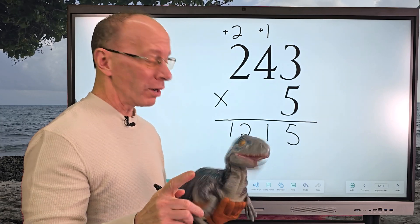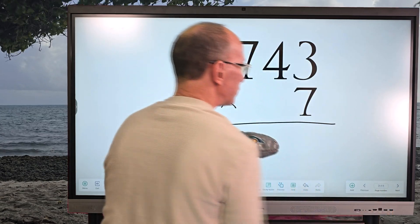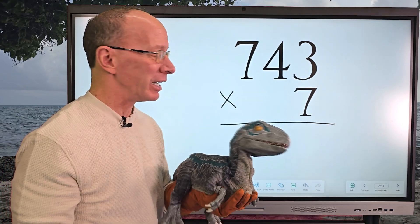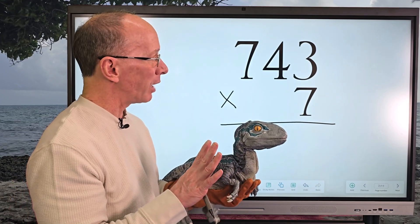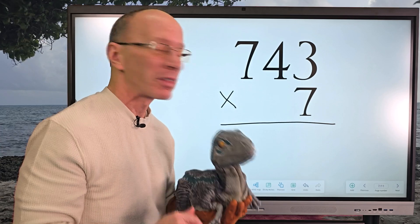We have 743. Whoa, that's a big problem! Don't worry. And we're going to multiply that times seven. All right, let's begin. Seven times three equals twenty-one, so I put the one here and I put the two up here. Again, we're going to add that number in a little bit—not yet, but in a little bit.